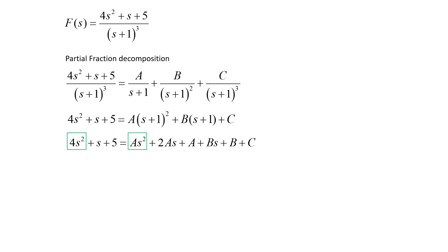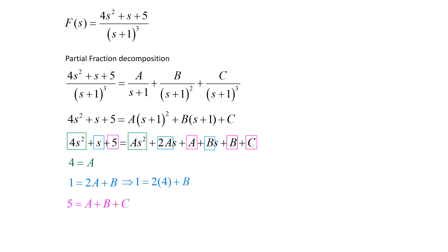Equating coefficients: the s squared coefficients give 4 equals a; the s coefficients give 1 equals 2a plus b; and the constant coefficients give 5 equals a plus b plus c. From the first equation, a equals 4. Substituting into the second: 1 equals 8 plus b, so b equals negative 7. Substituting both into the third: 5 equals 4 minus 7 plus c, giving 5 equals negative 3 plus c, so c equals 8.